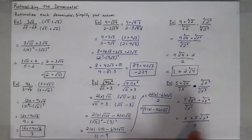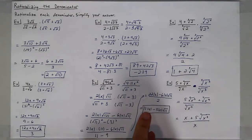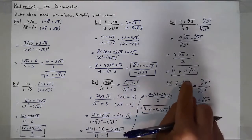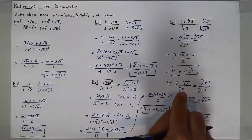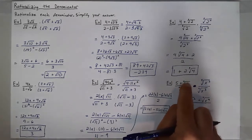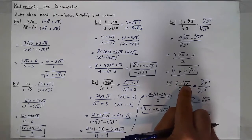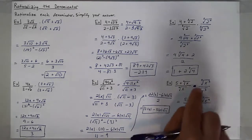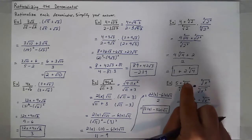Whether or not we need absolute value bars depends on how the expression was given to us. A fourth root cannot have a negative underneath, or else it would not be a real number. So if I'm assuming that x needs to be positive, I'll note that next to my answer.